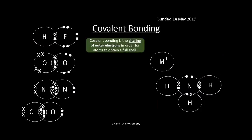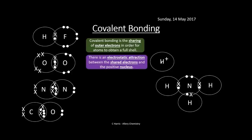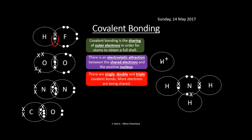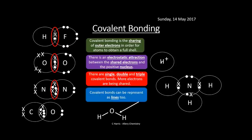Covalent bonding is the sharing of outer electrons so atoms can obtain a full shell. Instead of transferring electrons as in ionic bonding, atoms share electrons. There's an electrostatic attraction between the shared electrons and the positive nucleus. We have single bonds (2 electrons shared), double bonds (4 electrons), and triple bonds (6 electrons). Covalent bonds can be represented with lines in a displayed formula.